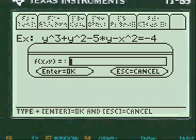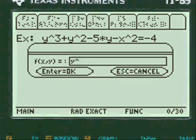So we're going to do alpha y cubed plus y squared minus 5 times y minus x squared. Press the equal sign, minus 4.